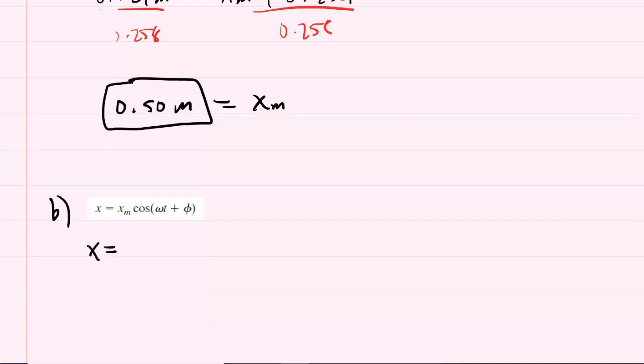We'll have x equals our amplitude of 0.5 meters times the cosine of the angular frequency, 7.07 radians per second, multiplied by 0 seconds, plus the phase constant of negative 8.38. And that's actually in radians.